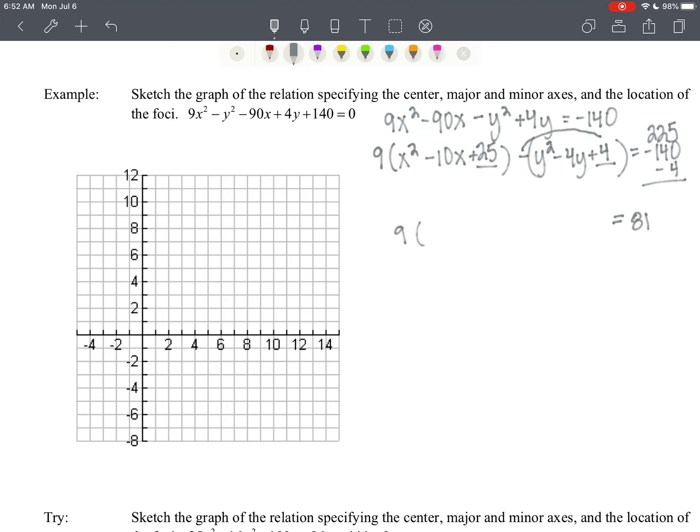225 minus 140 minus 4 is going to give us 81. So we've got 9 times the quantity x minus 5 squared minus y minus 2 quantity squared. We'll divide everything by 81, and we get x minus 5 quantity squared over 9 minus y minus 2 quantity squared over 81 equals 1.